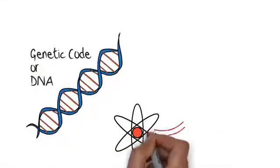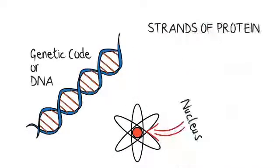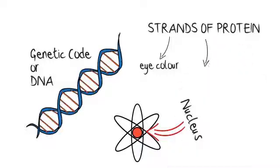These genetic codes or DNA are found in the nucleus of your body's cells. They are strands of protein that determine our eye color, our height, our weight and so on.